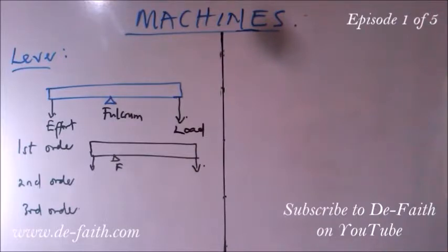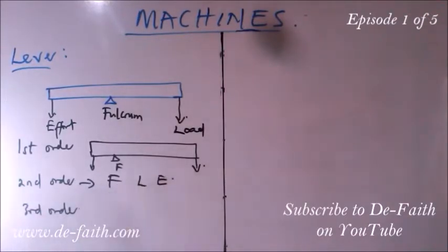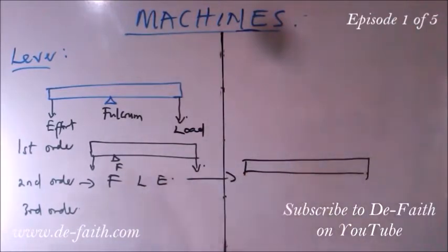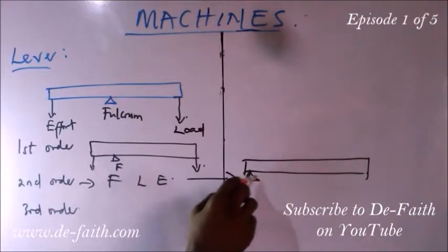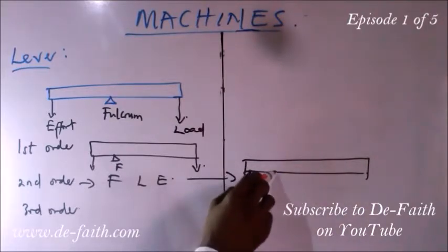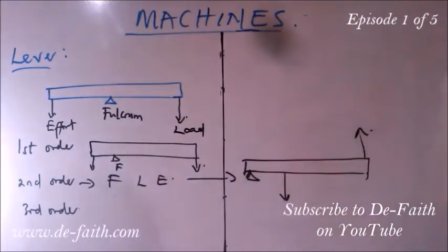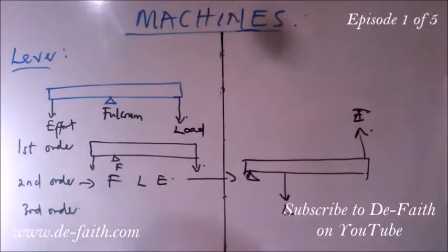In the second order lever, the arrangement is fulcrum, load, and effort. The fulcrum is at one edge, the load is in the middle, and the effort is at the other end. Examples of second order levers include the nutcracker and the wheelbarrow.